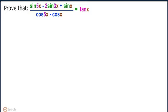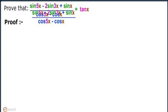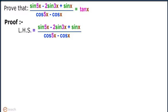Let us see an example. Prove that (sin 5x minus 2 sin 3x plus sin x) divided by (cos 5x minus cos x) equals tan x. Let us see the proof. The left hand side is (sin 5x minus 2 sin 3x plus sin x) divided by (cos 5x minus cos x).